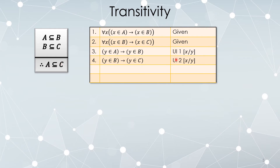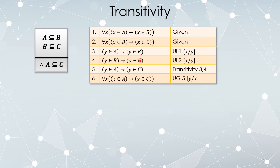We universally instantiate both givens with the same variable Y — we're allowed to do that because universal instantiation is unrestricted. So: Y ∈ A implies Y ∈ B, and Y ∈ B implies Y ∈ C. Using transitivity on these two conditional statements gives us: if Y ∈ A then Y ∈ C. We can now universally generalize because Y was only introduced by universal instantiation, not existential, and did not appear as a free variable in a given. So we go back to X, and we're done — that's exactly the definition of our claim.